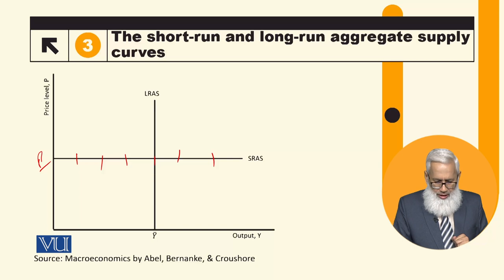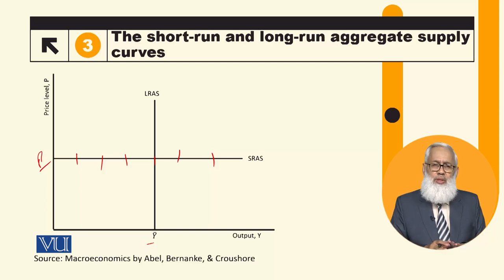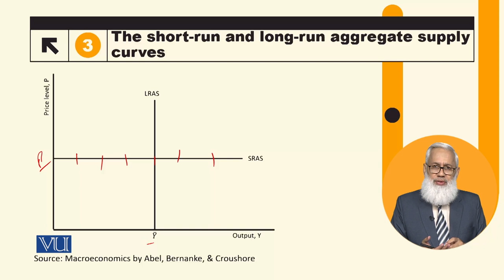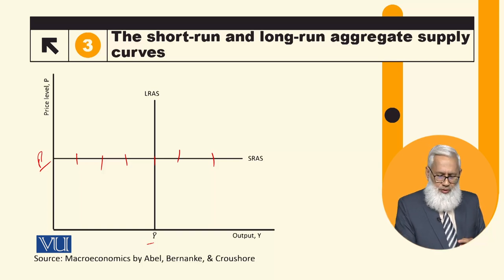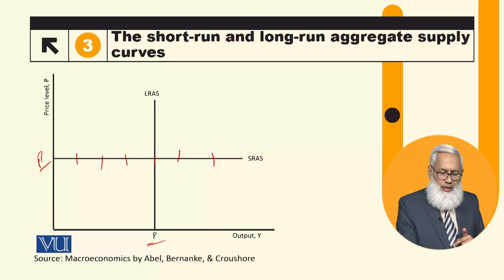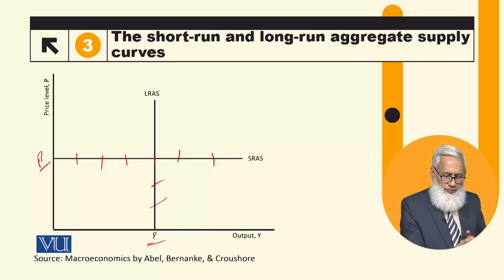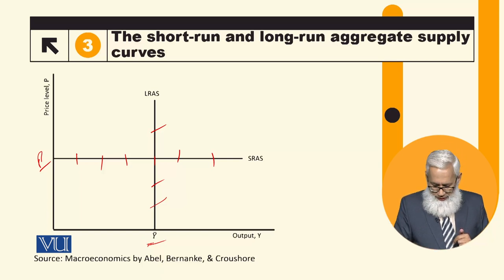اور long-run میں output level fix ہو جاتی ہے: prices adjust ہوتی ہیں، تمام markets clear ہوتی ہیں، labor market clear ہونے سے demand اور supply کے برابر ہونے پر full employment level determine ہوتا ہے۔ Production function سے output fix ہوتی ہے۔ تو جو بھی price change ہو، output نہیں بدلتا، so long-run aggregate supply curve ایک vertical curve ہے اور short-run horizontal line ہے۔